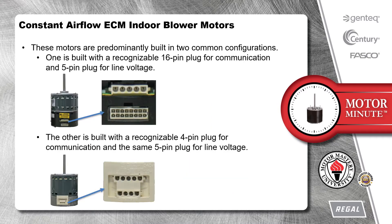Constant Airflow ECM Indoor Blower Motors are predominantly built in two common configurations. One is built with a recognizable 16-pin plug for communication and 5-pin plug for line voltage. The other is built with a recognizable 4-pin plug for communication and the same 5-pin plug for line voltage.